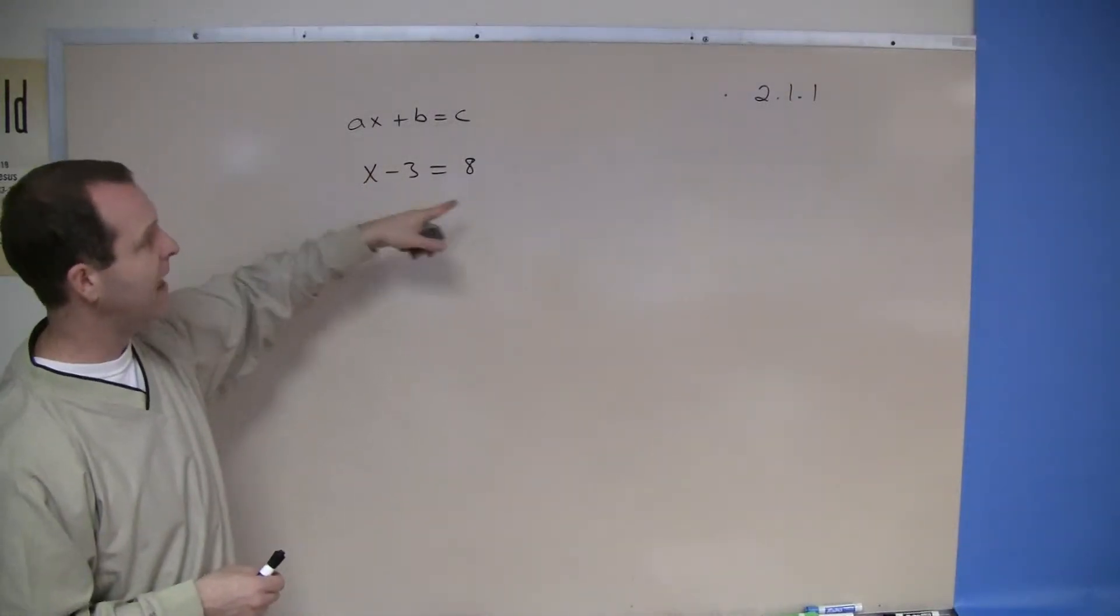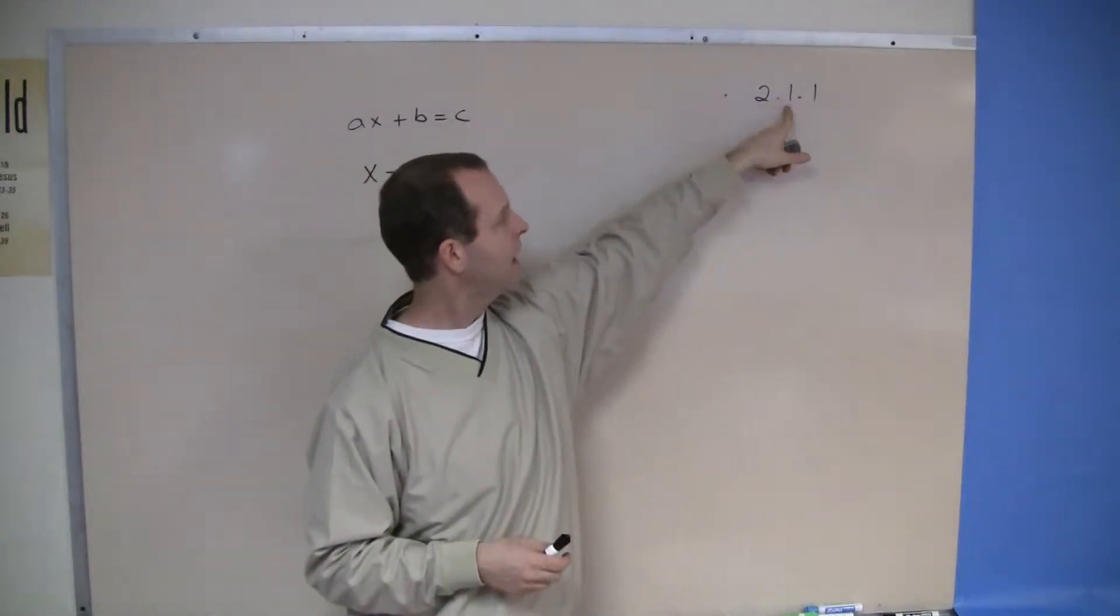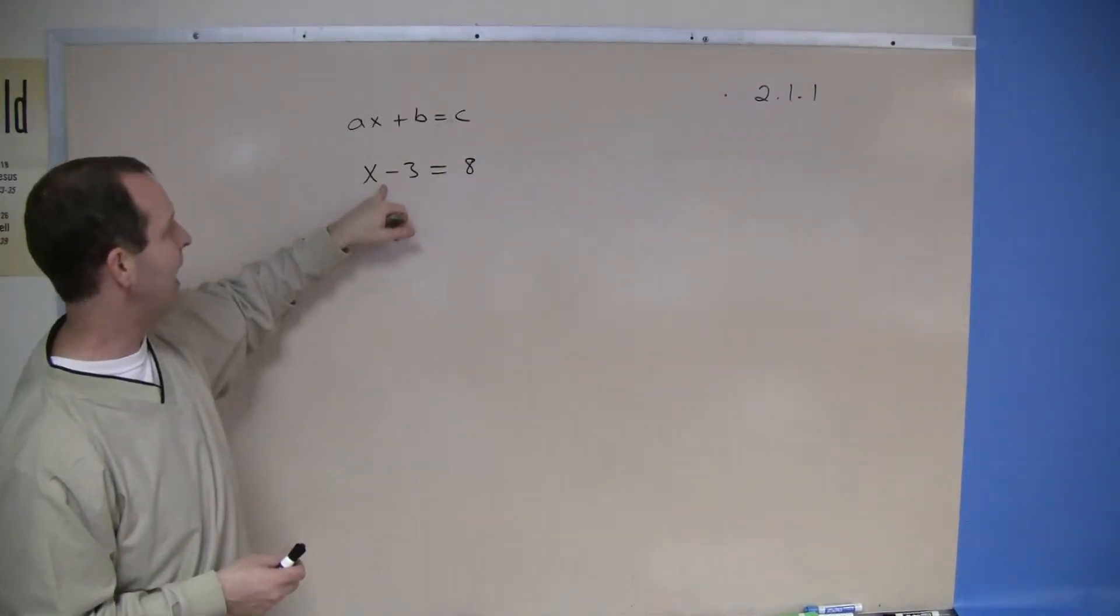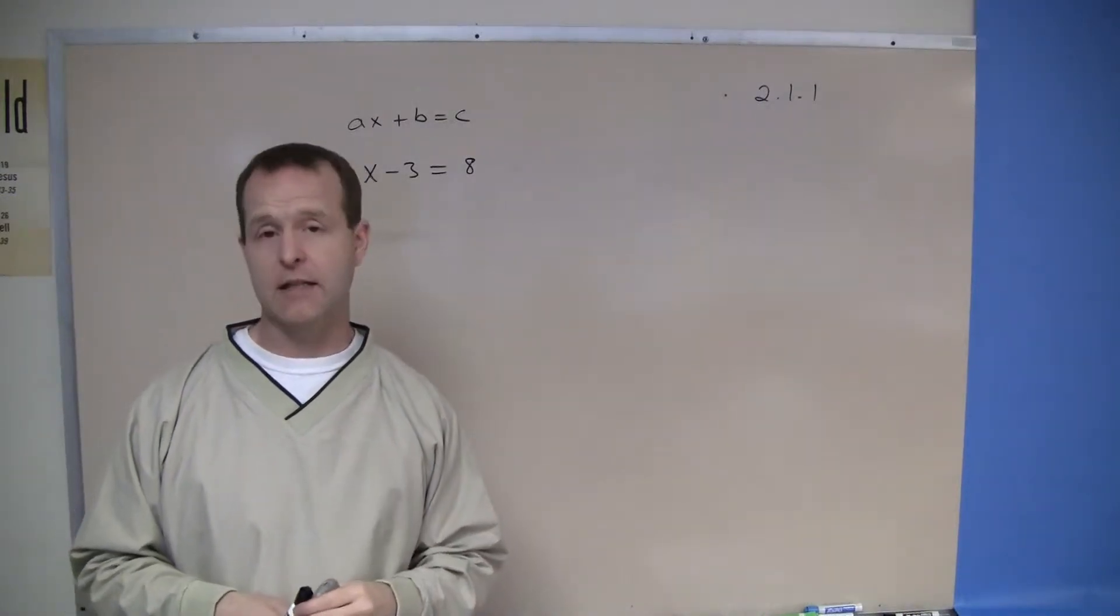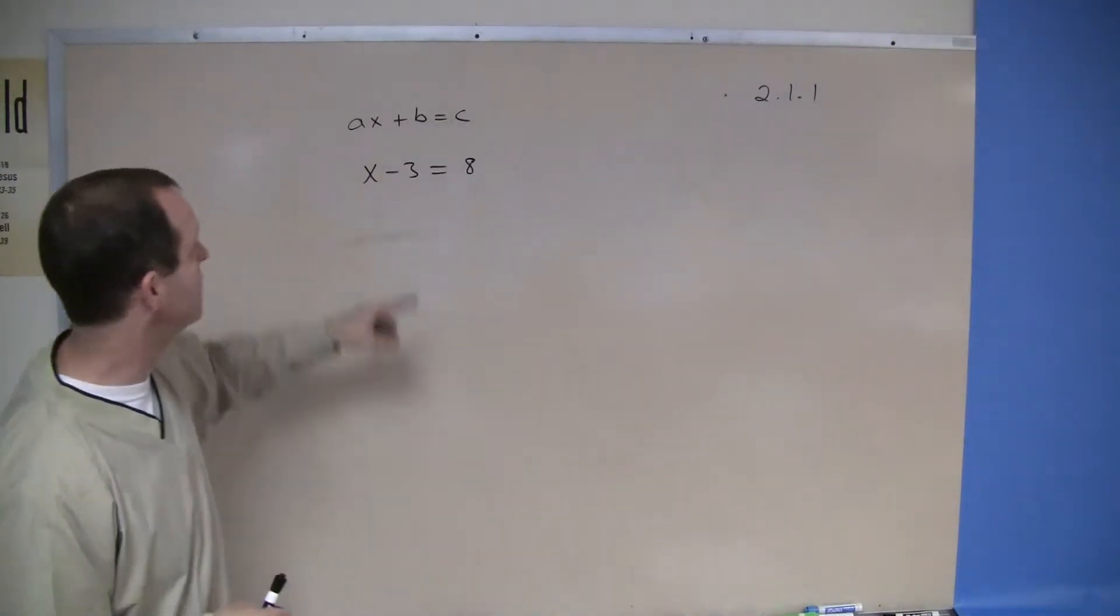In this example, chapter 2 section 1 example 1, I'm given X minus 3 equals 8. That is a linear equation because it fits into this form.